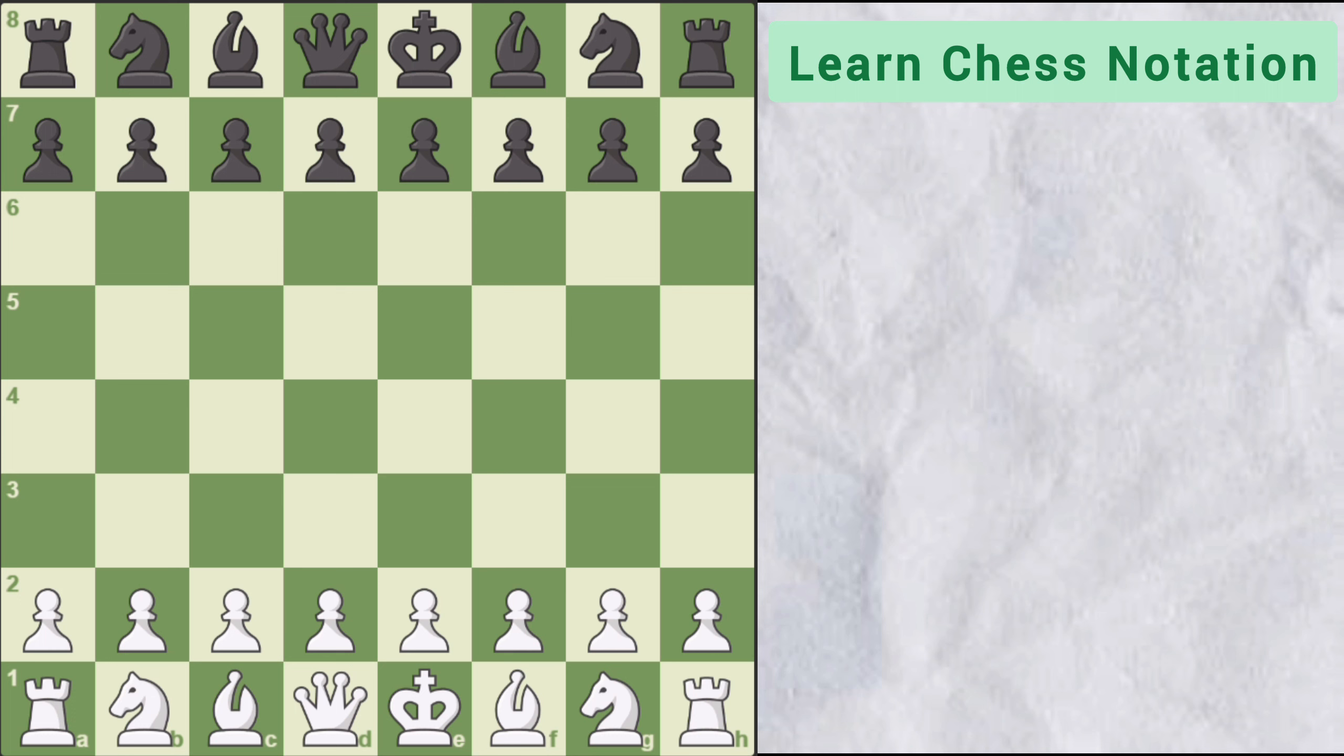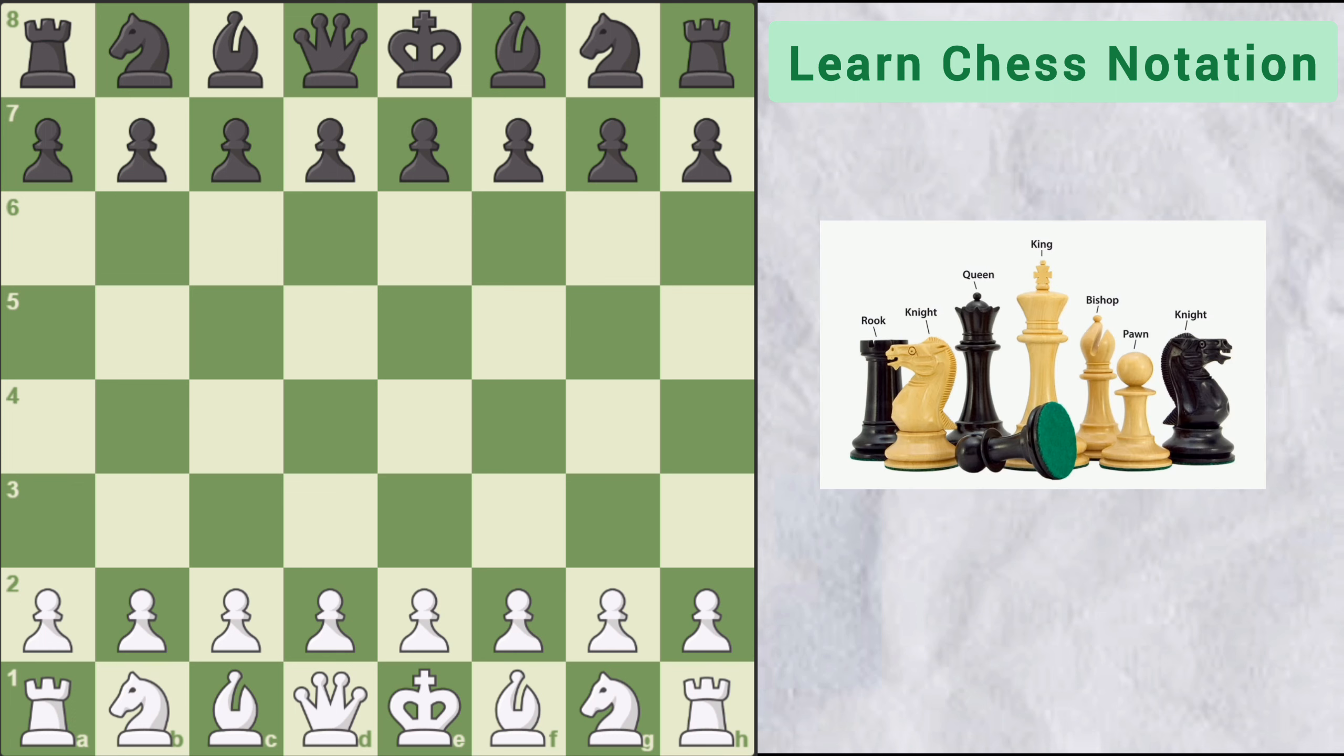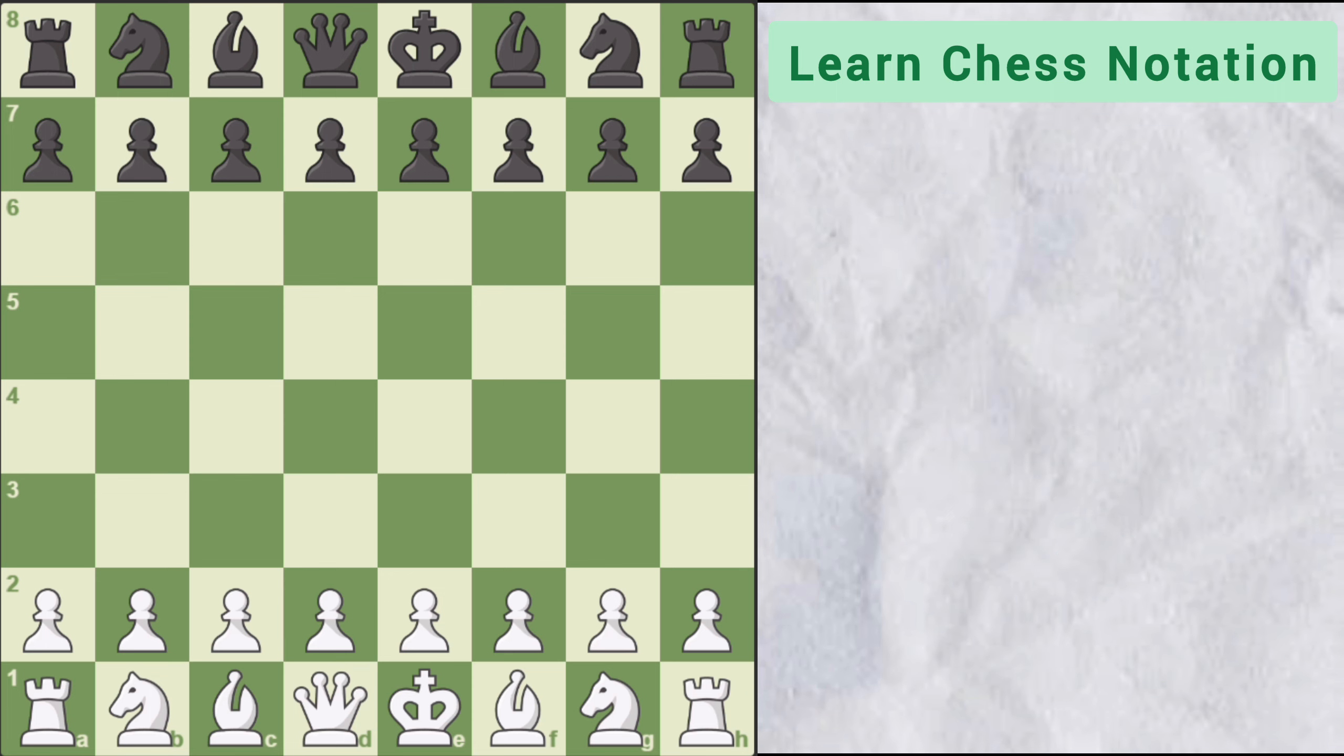Now let's see the notation of actual moves. To write a move, we combine the notation of piece and the name of the square where it moved. The notation of piece came first and followed by name of the square where the piece moved. Let's learn this with the help of example. If I move my Knight to F3, then I will write NF3 which means Knight moved to F3 square. The first letter N denotes the notation of piece and the next letter F and number 3 refer to the name of the square where the piece moved.